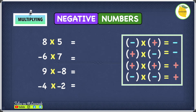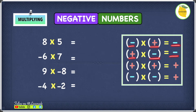In other words, when you have two signs that are the same, your answer will be positive. When you have two signs that are different, your answer will be negative.